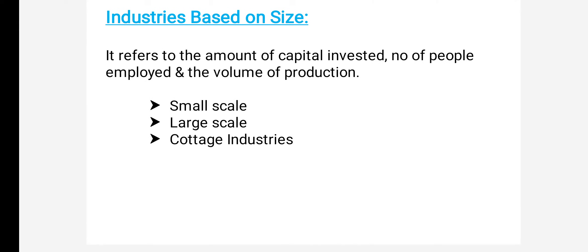Industries based on size. The size of an industry refers to the amount of capital invested, the number of people employed, and the volume of production — meaning the quantity of goods produced. Based on these three factors, we can say the size of an industry is small, large, or cottage.